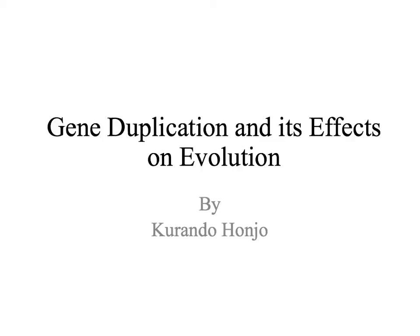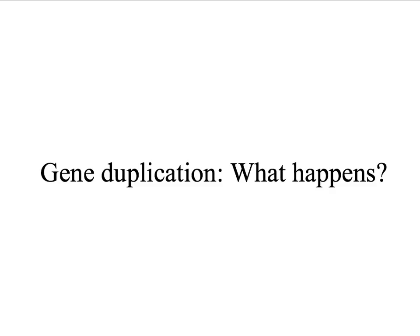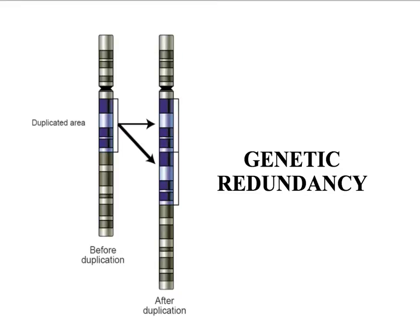Gene duplication and its effects on evolution. So gene duplication, what happens? In simple terms, a region of DNA that contains a gene is duplicated by accident through errors in DNA replication or repair, resulting in a spare copy of the gene.